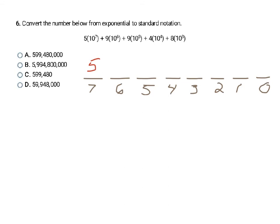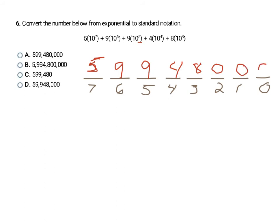Here, I can see the highest exponent on the 10s in this exponential expression is 7. I start with 7 and write blanks from 7 down to 0 to fill in. Don't forget the 0 representing the ones column or it will mess up your whole answer. The 5 is beside 10 to the 7th, so I write a 5 above it. The 9 is next to 10 to the 6th, so I write 9 above the 6. Then 9 above 5, 4 above 4, and 8 above 3. There's no 10 to the 2nd, 10 to the 1, or 10 to the 0, so I fill in zeros there. My final answer is 59,948,000, which is D.